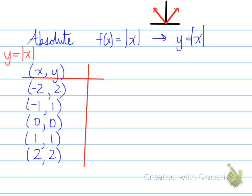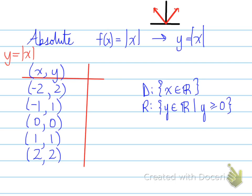Those are what the absolute coordinates look like. The domain is x belongs to real, and the range is y belongs to real, such that y is greater than or equal to 0. We've seen that domain and range before — that's right, it was a parabola. So you could be asked on a test to compare the different basic functions and describe similarities and differences between them.